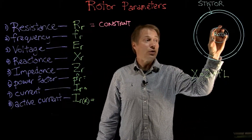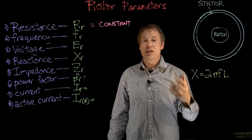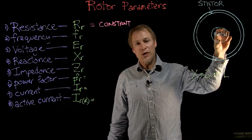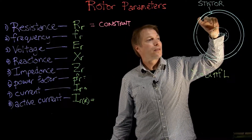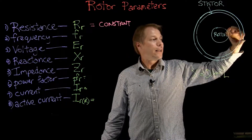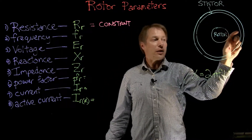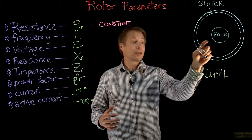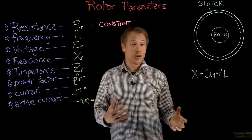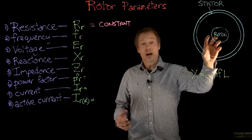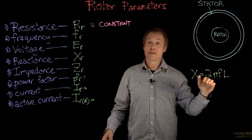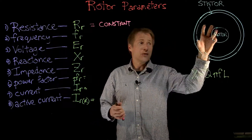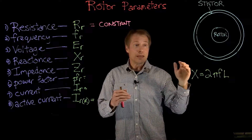When the rotor is stopped, it's going to take on the full electrical frequency of the stator, just as a transformer would. But as the rotor spins — going to the other extreme where the rotor spins at exactly synchronous speed — the rotor and stator field are spinning at the same speed, so zero lines of flux would be cut. With no relative motion between the conductor and the magnetic field, we get no induced voltage and no induced frequency. So when stopped, frequency is high; as the rotor spins up, frequency gets lower.